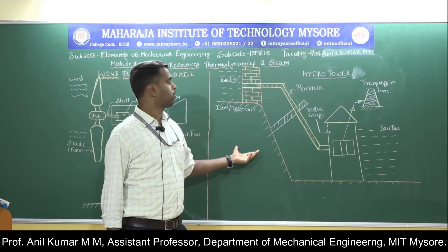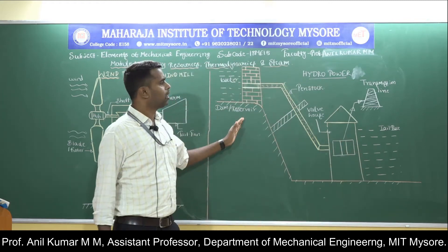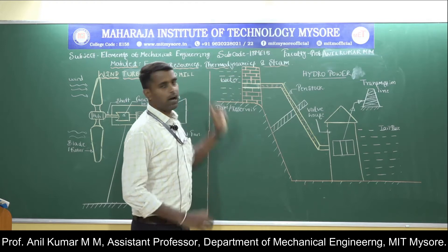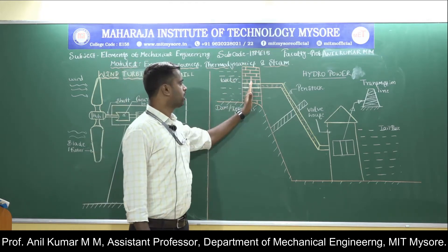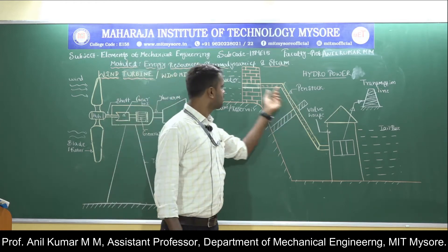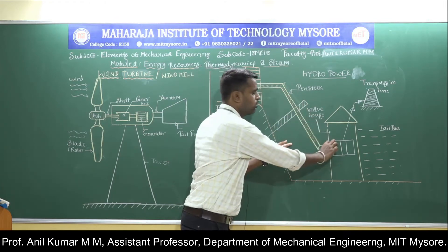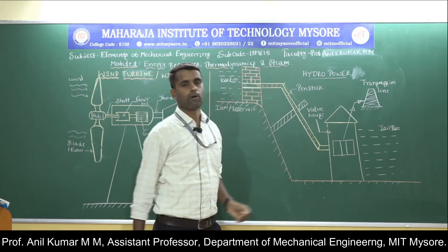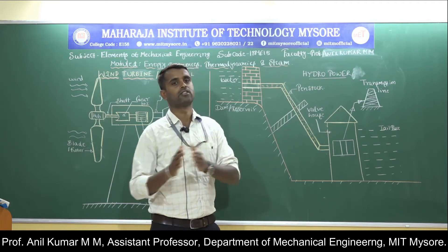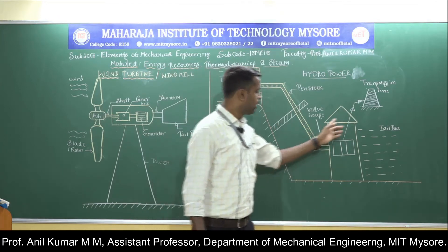Coming to the construction of the hydroelectric power plant, it consists of a dam, penstock, power house, and draft tube. The dam is constructed across the river to increase the height of the water level. The penstock is a pipeline that connects the water reservoir to the power house. At the end of the penstock, a small nozzle is provided. The nozzle is a passage with a varying cross-sectional area that converts potential energy into kinetic energy — reducing pressure and increasing velocity.